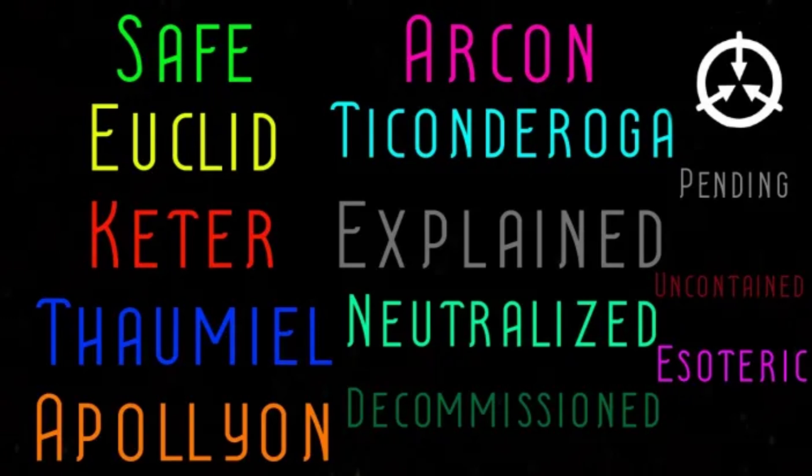If it cannot fit into a box and is about to end the world, it is Apollyon. If you could have locked it in a box but chose not to, it is Archon. If you cannot fit it into a box but that doesn't really matter, it is Ticonderoga. If you have a row of boxes in front of you and you're not sure what to put it in, it is Pending.